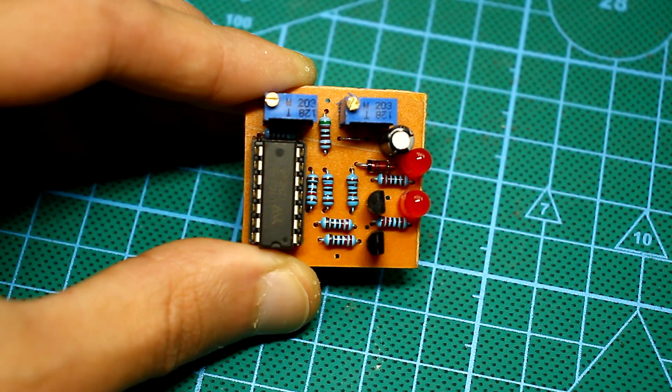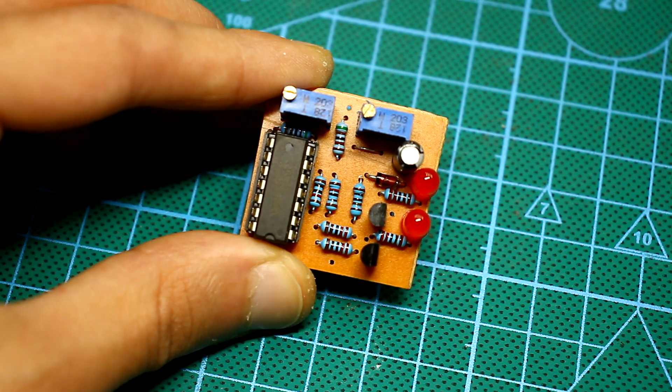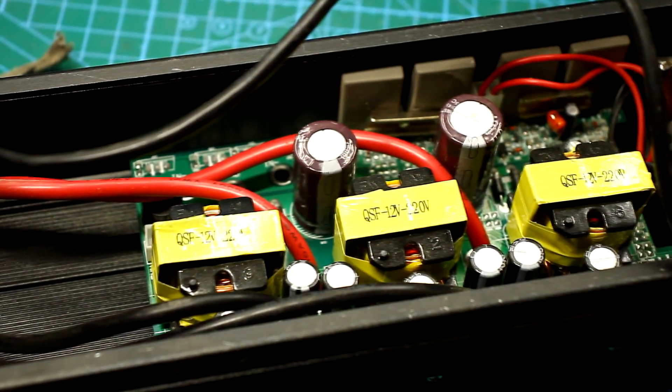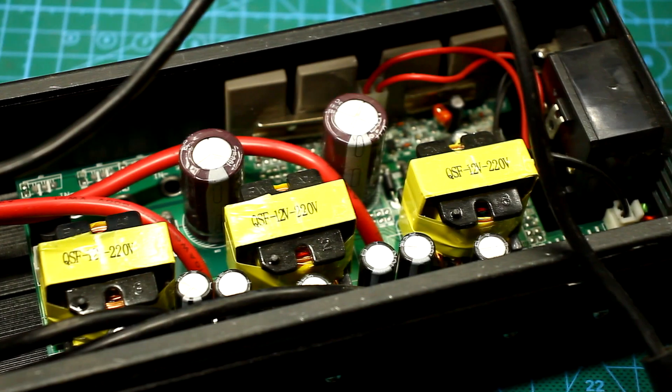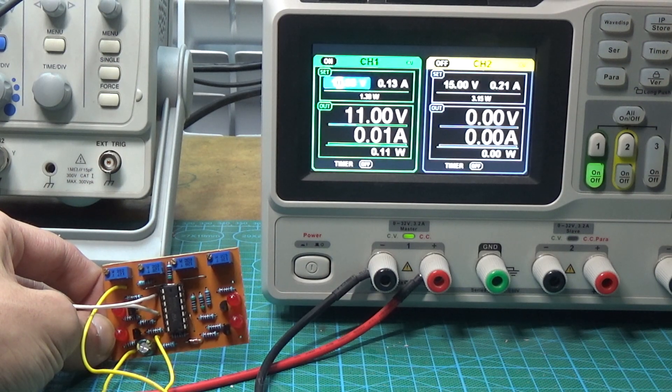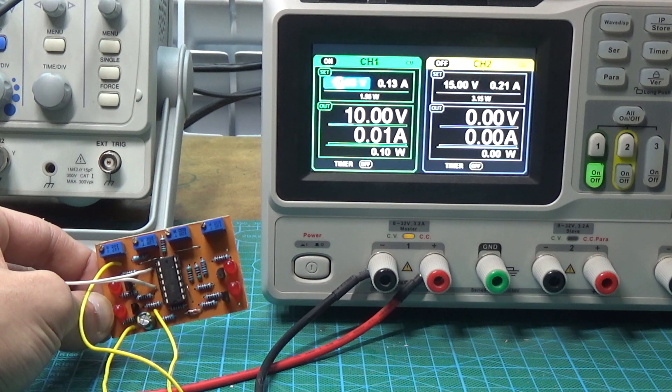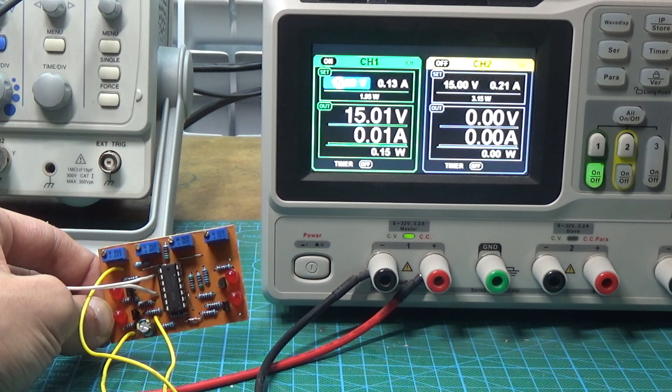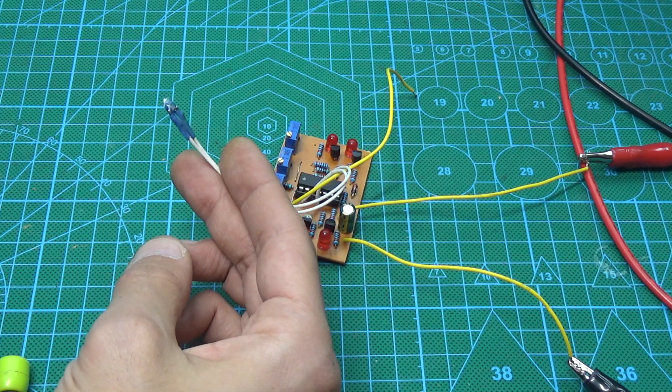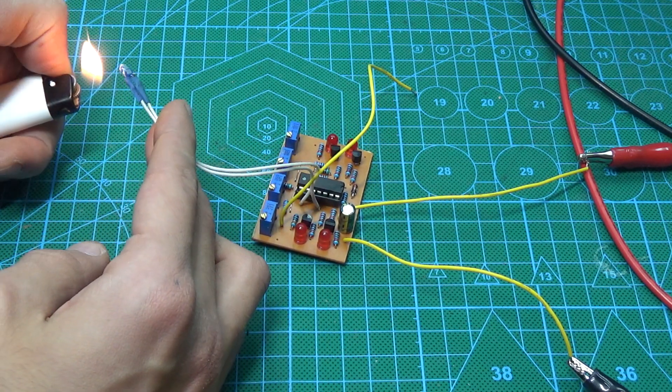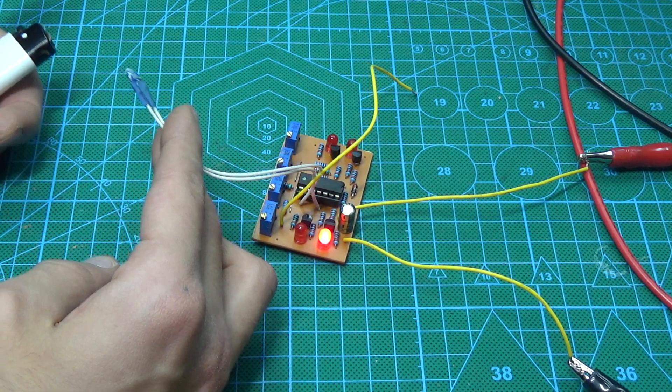Just in case, I remind you that this is a universal protection that can be used, for example, in the 12-220 converter. Such protection will not allow the converter to discharge the battery. It will also turn off the converter if the supply voltage is above normal. It will provide thermal protection and protection against short circuits if it accidentally happened.